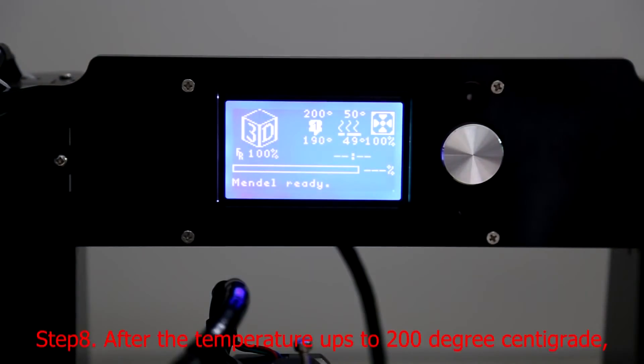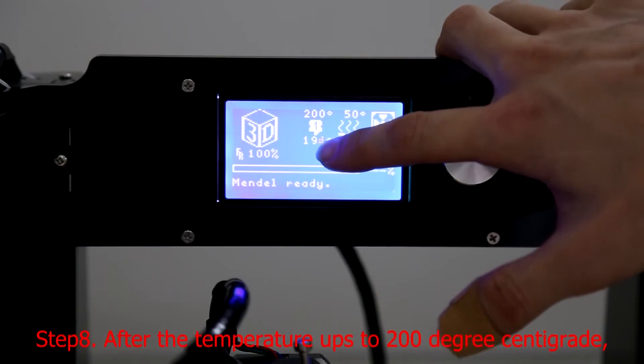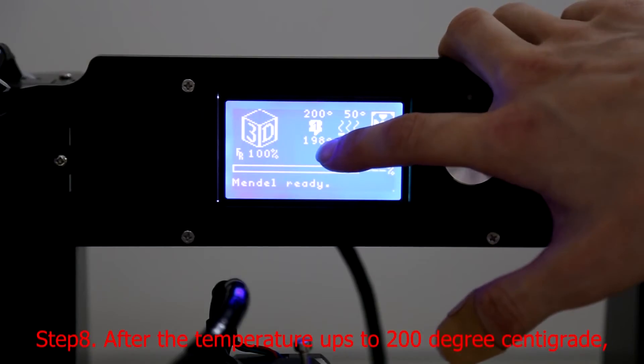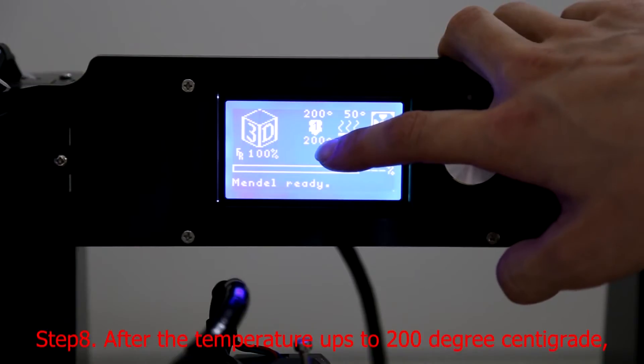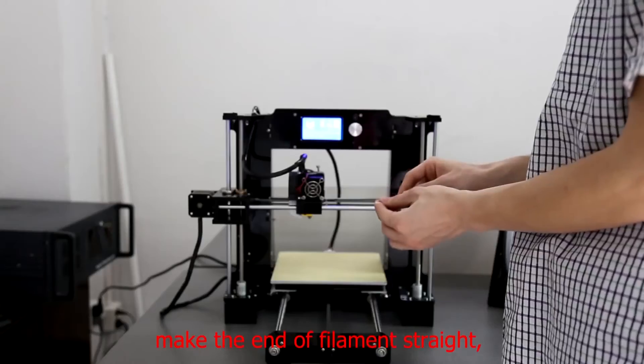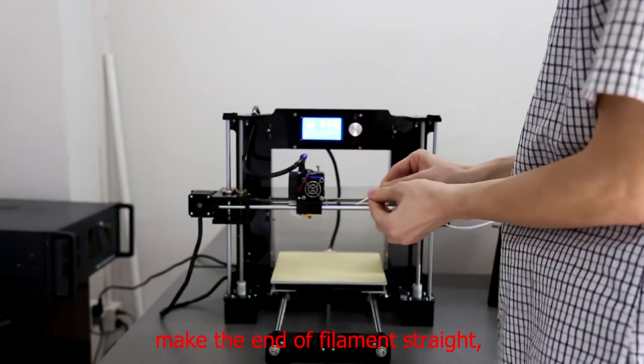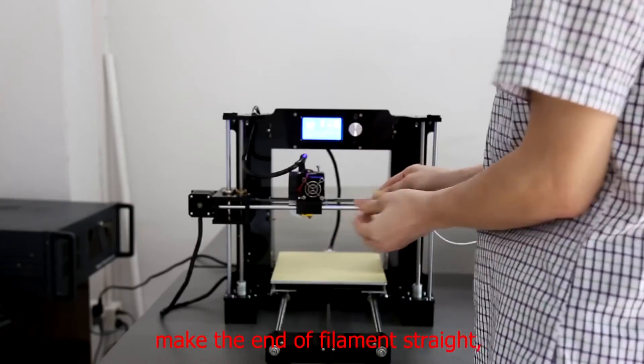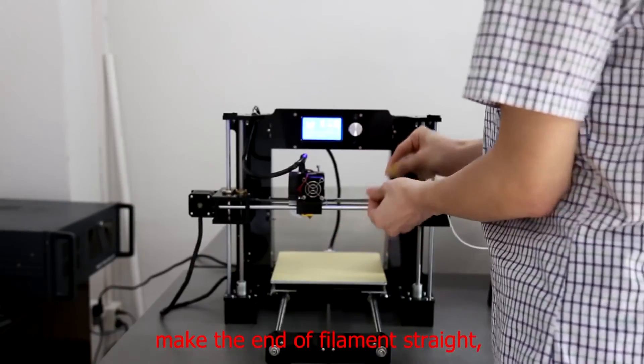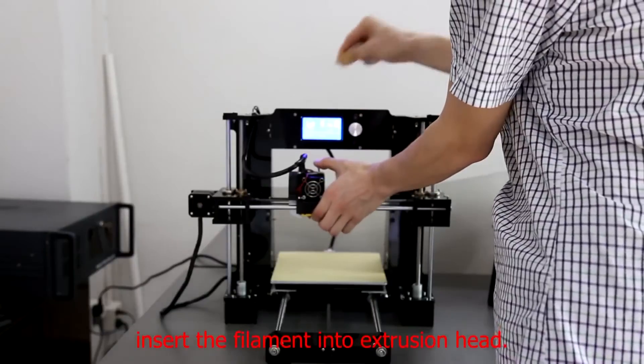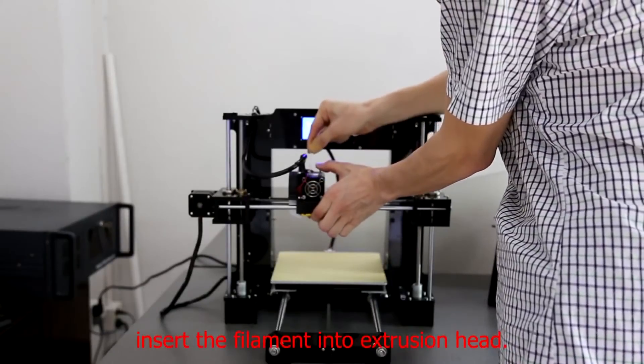Step 7: Preheat filament. After the temperature reaches 200 degrees Celsius, make the end of the filament straight and insert the filament into the extruding head.